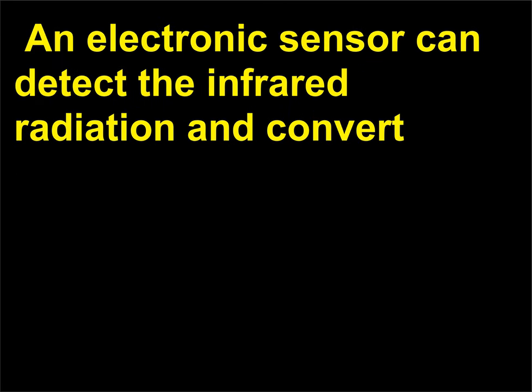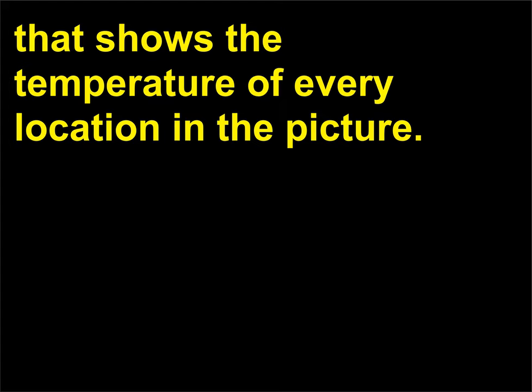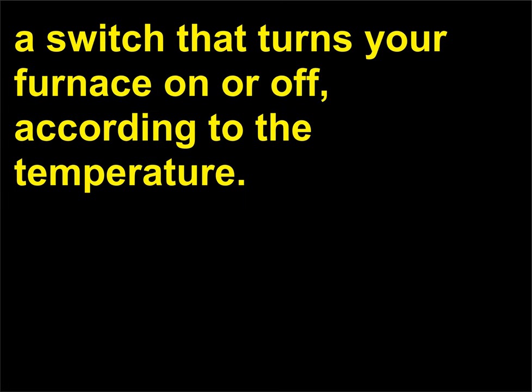An electronic sensor can detect the infrared radiation and convert the amount and wavelength of radiation it receives to a temperature. The sensors can be built into cameras that create a picture showing the temperature of every location — such a picture is known as a thermograph. An electronic thermometer within the thermostat in your home or office triggers a switch that turns your furnace on or off according to the temperature.